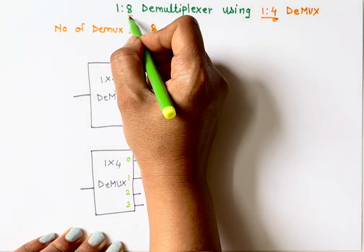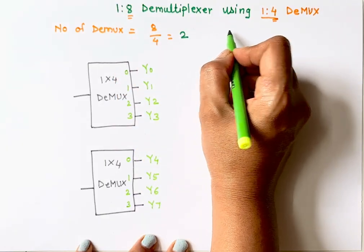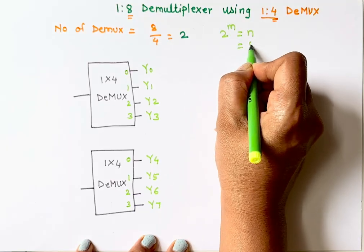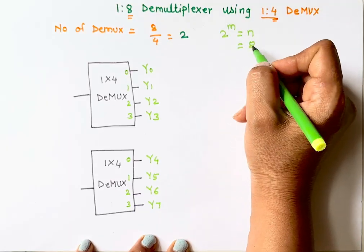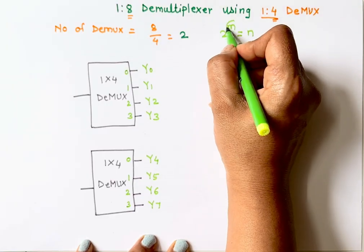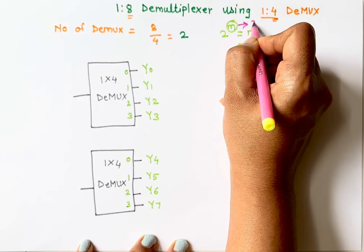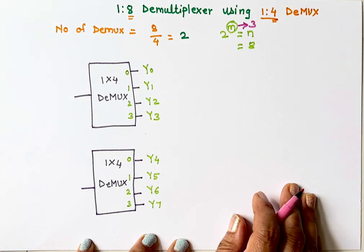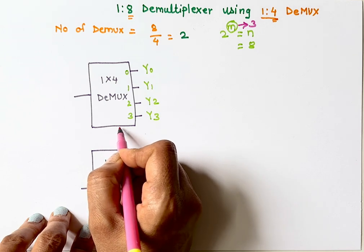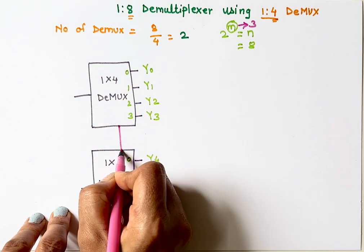When implementing a 1x8 demultiplexer, I need to identify how many select inputs are needed. The formula is 2 raised to m equals n, where n is the number of output lines. Here n equals 8, so select inputs m equals 3. Three selection inputs are needed. Each 1x4 demultiplexer has 2 select inputs, so I will connect S0 and S1 together across both demultiplexers.